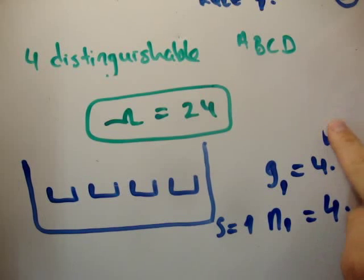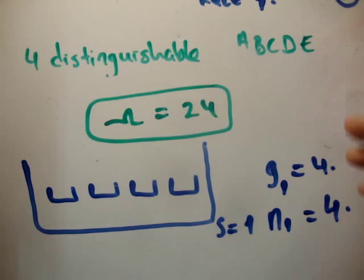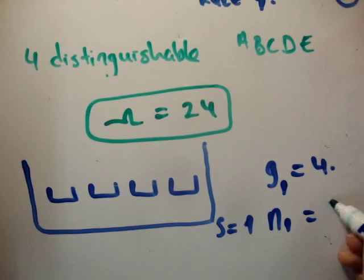Note that these two fours, G sub 1 is equal to 4, and N sub 1 is equal to 4, are independent. If I put in five particles, if I had E as well here, then this would be equal to 5, and yet we would still have G sub 1 is equal to 4. But that's not the case for the moment.